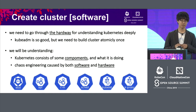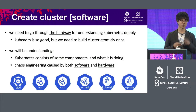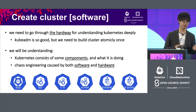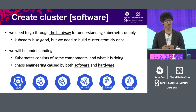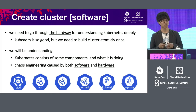If we do that, we will understand that Kubernetes consists of components like kube-apiserver, kube-proxy, kube-scheduler, and the container runtime. And we'll understand what each component is doing and how it works.